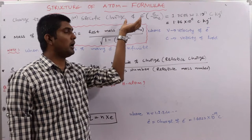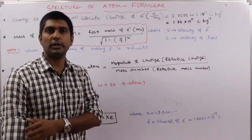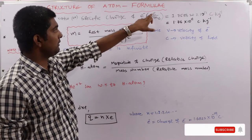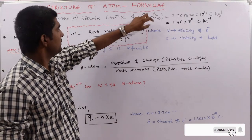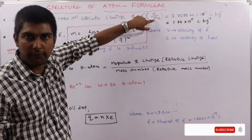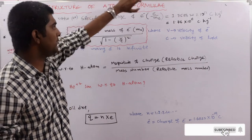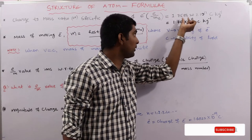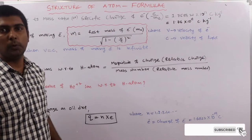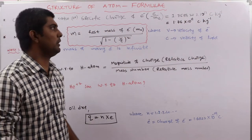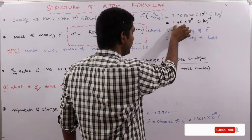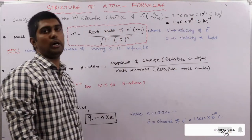The first one is the charge-to-mass ratio, also called the specific charge of electron, given by e/me. This equals 1.75882 × 10¹¹ coulomb kilogram inverse; generally we take it as 1.76 × 10¹¹.